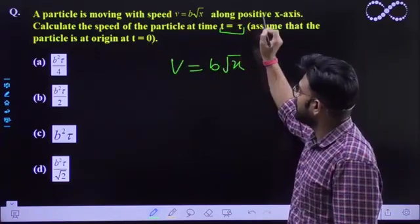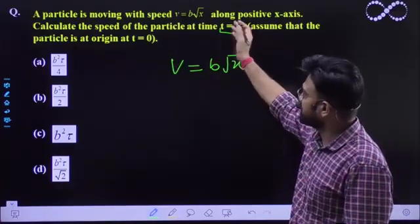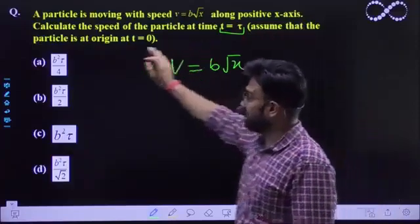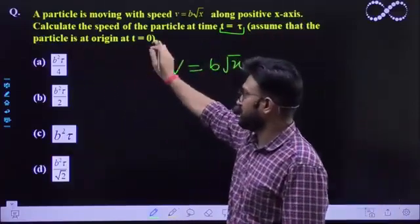So t equal to τ time pe woh iska expression find out karna hai. Calculate the speed. Speed kitni hogi iski. Assume that the particle is at origin at t equal to zero.